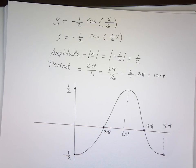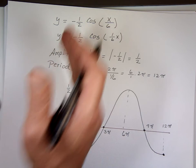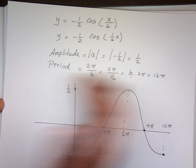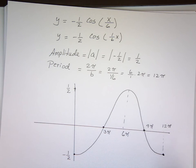So that's what A and B do. A controls how high up and down the function goes — that's vertical stretching and compressing. B controls how squished or how spread out the graph is — that's horizontal stretching or horizontal compressing.